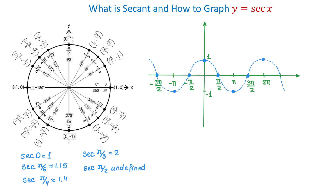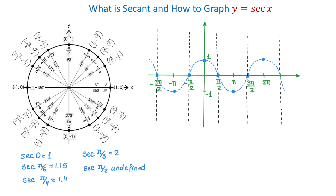Notice that at the points where the cosine function crosses the x-axis, the secant function will have vertical asymptotes — at these points the secant function is undefined. I will draw the vertical asymptotes as dotted lines to help graph the secant function. At the maximum and minimum points of the cosine function, the secant has the same value, so these are the points where the two graphs connect.